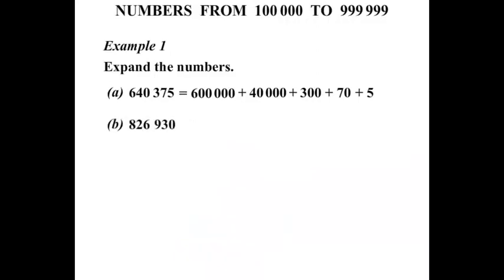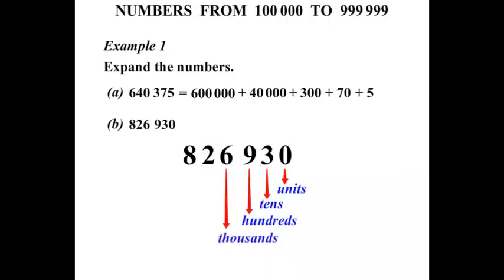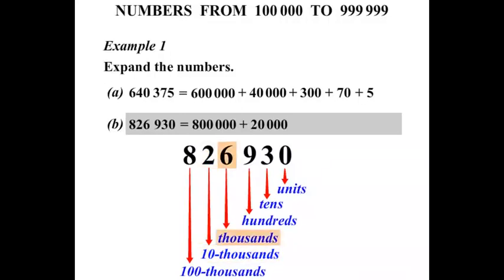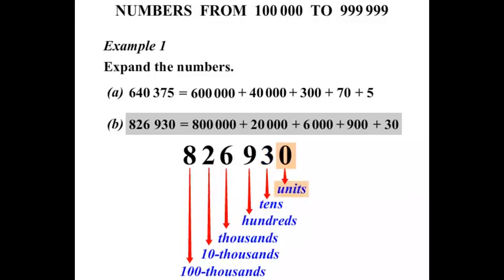The next one: 826,930. Again, let's write it and go through. Units, Tens, Hundreds, Thousands, Ten-Thousands, One-Hundred-Thousands. The 8 is worth 8 lots of 100,000, so that's 800,000 to start with. 2 is worth 2 lots of 10,000, so we add 20,000. We have 6 lots of thousands, so we add 6,000. We have 9 lots of hundreds, so we add 900. We have 3 lots of tens, so we add 30. And finally, we have 0 lots of ones, which is 0, so there's nothing more to add.